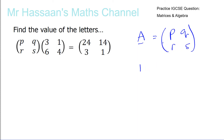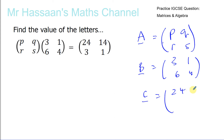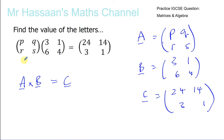And let's call matrix B: 3, 1, 6, 4. And let's call matrix C: 24, 14, 3, and 1. So what we have here is matrix A times matrix B equals matrix C, and we want to find matrix A. We know what B and C are.